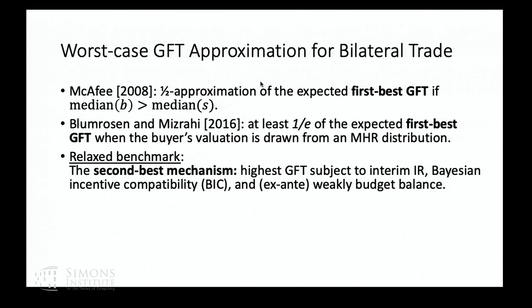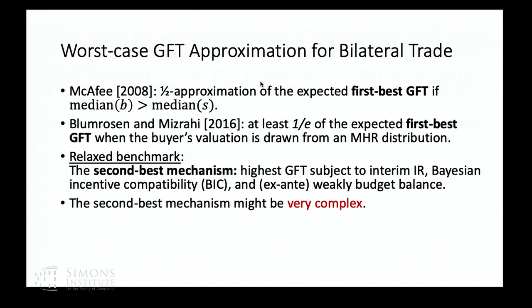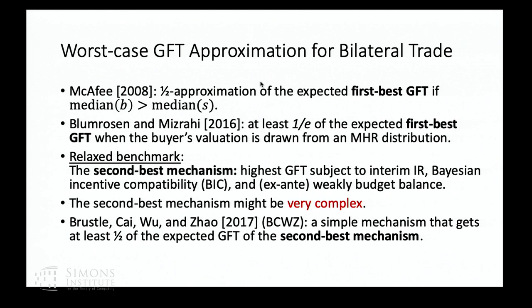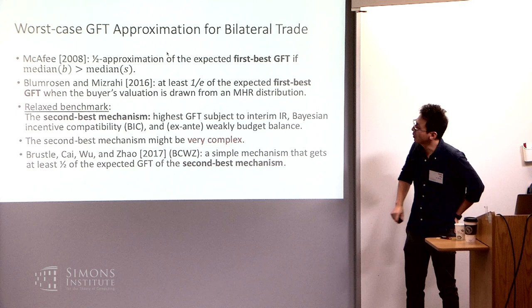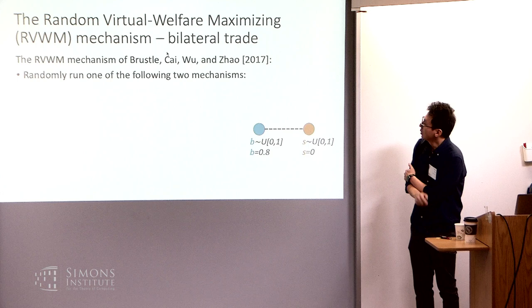So what people did is relax the benchmark. Instead of looking at the first best, let's look at the second best — the highest gains from trade you can get using a mechanism that's IR, IC, and budget balanced. The optimal second-best is quite complex even in bilateral trade; in double auction it's a monster, so you don't want to look at that. What we did is look at an approximation to the second best. This is a result with my student and postdoc: you can have a quite simple mechanism that gives half of the second-best gains from trade.